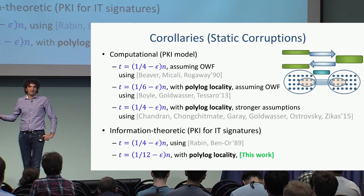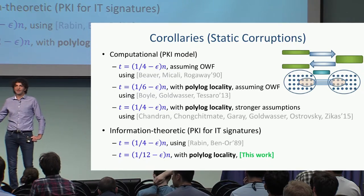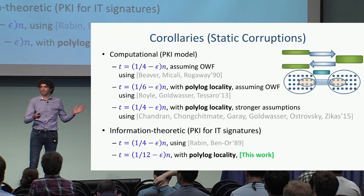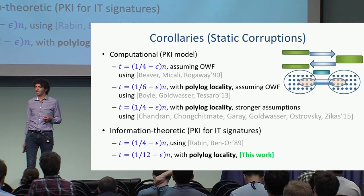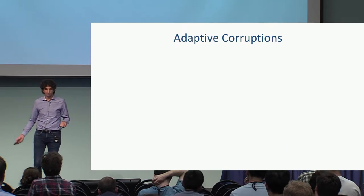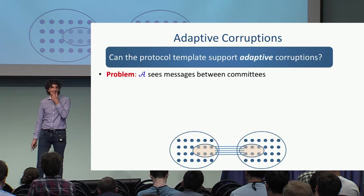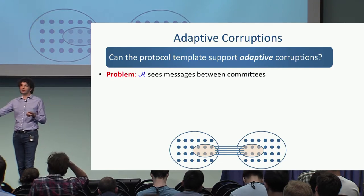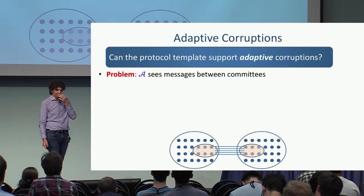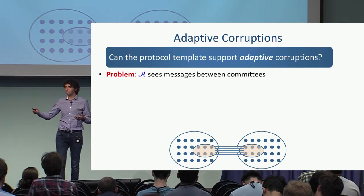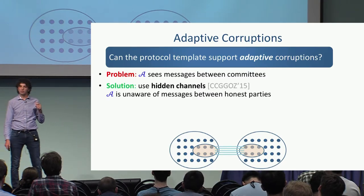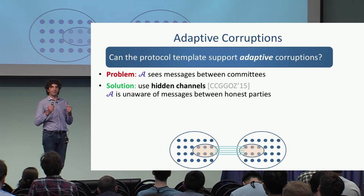But we have committees — what about adaptive adversaries? It's a nice result but doesn't seem to hold against strong adversaries. What goes wrong with adaptive corruption? The adversary can see the communication, and there's no way around this problem. So we use the same ideas from Chandran and Tal and use hidden channels: if two honest parties communicate, the adversary doesn't know about it. This is inherent if we want adaptive corruptions with low locality or sublinear cuts.